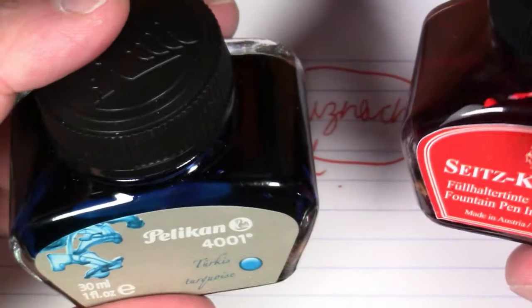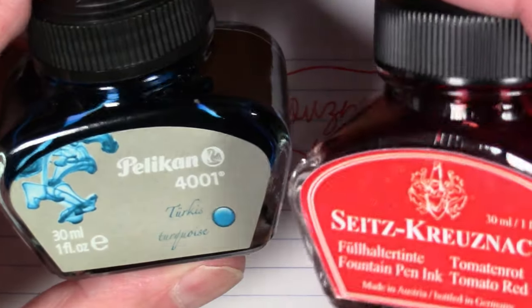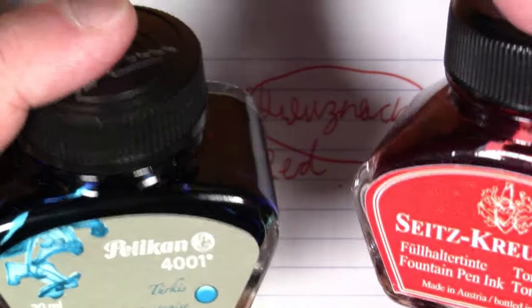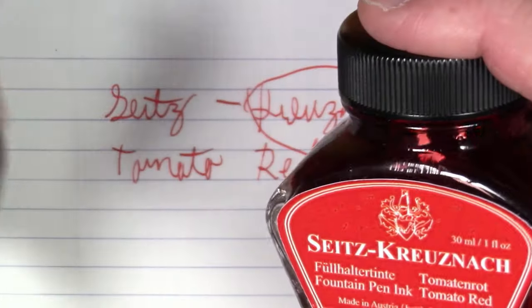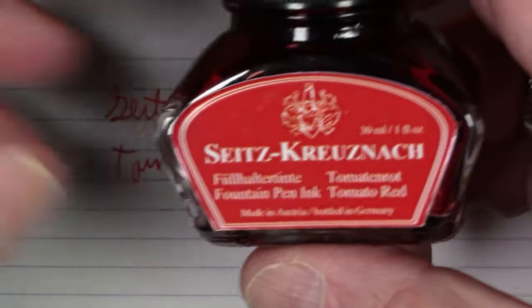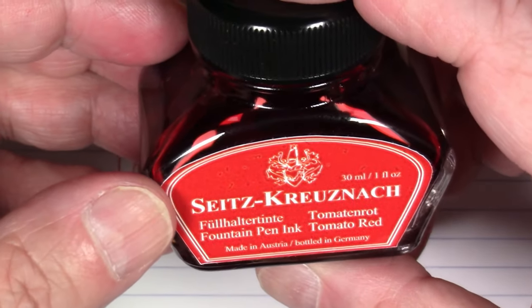The caps are of totally different design. And also the actual manufacturer of the bottles does not seem to be the same. They seem to be made a bit differently if you look at the bottom of the bottles. So unless they really went out of their way to have them look differently, I think it's just a question of one company copying the other's bottle shape. But I might be wrong. But in any case, this is Seitz Kreisenach Tomato Red.